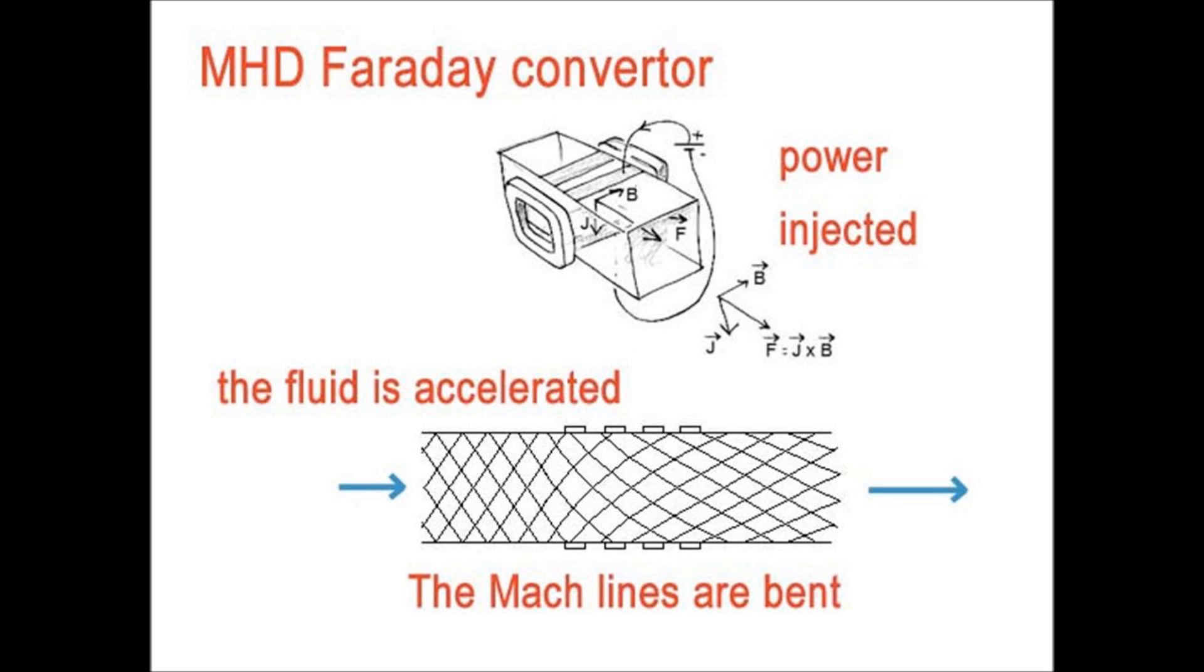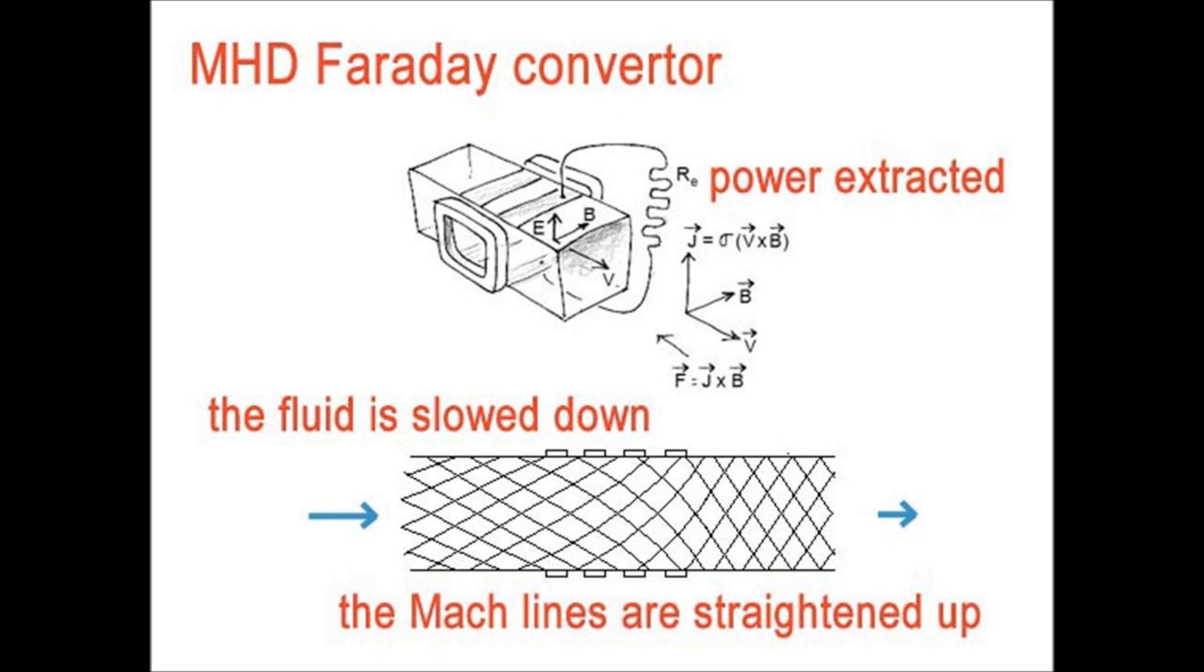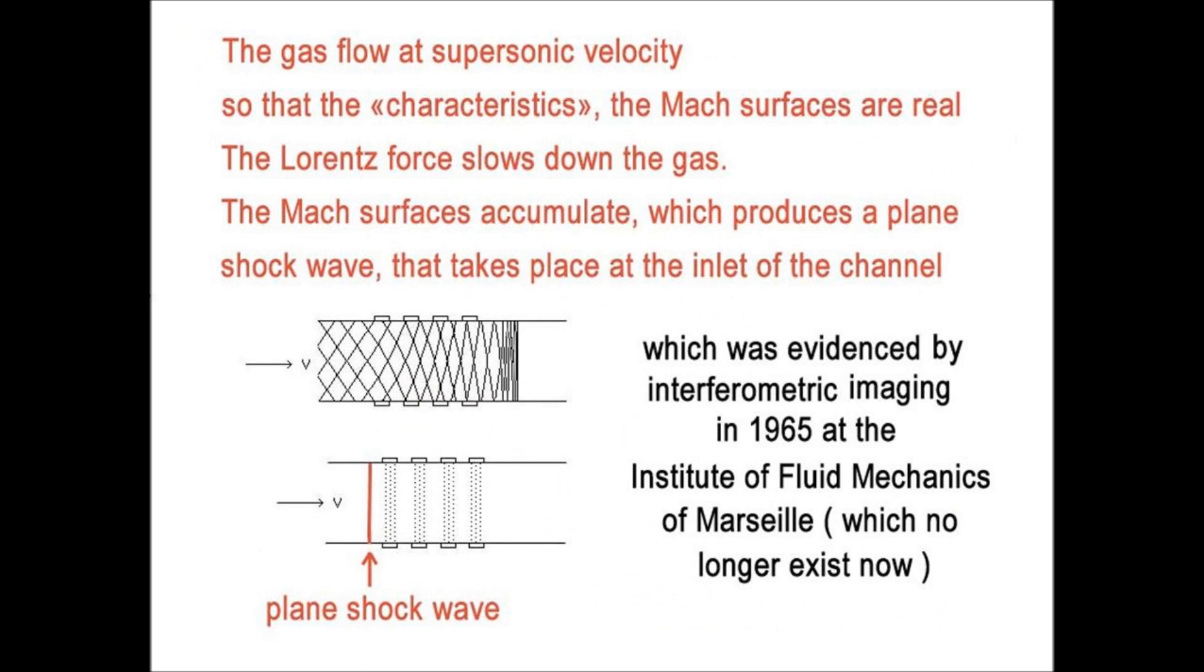Now, if we go back to the generator, if the interaction parameter is high enough, the change in the Mach lines will be so strong that a shock wave occurs. The birth of a shock wave is caused by the accumulation of the Mach lines.